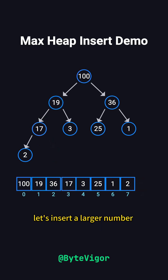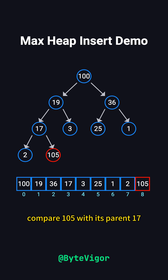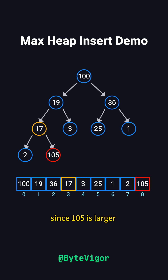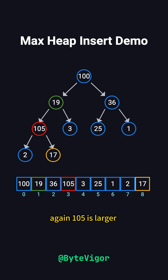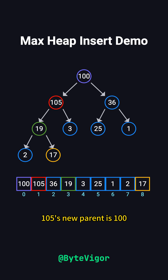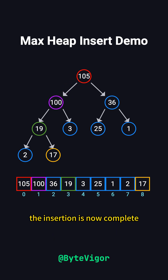Let's insert a larger number, like 105. First, we add 105 to the end of the array. Next, we begin the bubbling up process. Compare 105 with its parent, 17. Since 105 is larger, we swap them. Now 105's new parent is 19. Again, 105 is larger, so we swap them. Finally, 105's new parent is 100. Since 105 is larger, we swap one last time. The insertion is now complete, and the heap property is restored.